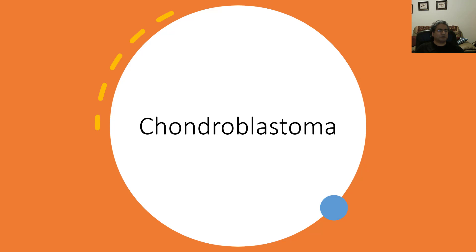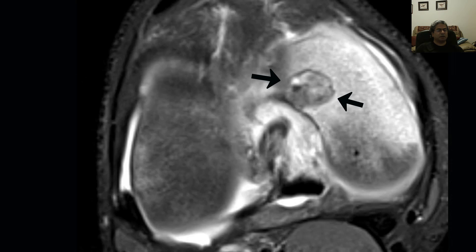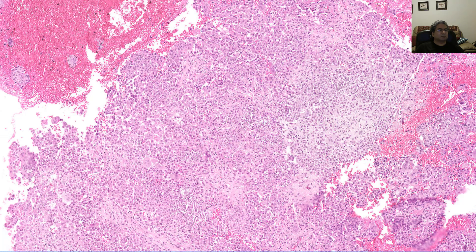Here's a five-minute overview on chondroblastoma of the bone. It's located in the epiphysis. On MRI, the lesion is very well circumscribed and surrounded by intense edema — all that white signal is edema. On gross pathology, it's again in the epiphysis and very well circumscribed.